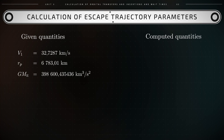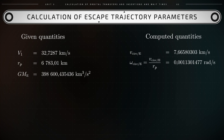With all of these parameters we find the following results: v_circ_e equals 7.66 kilometers per second and omega_circular_e equals 0.001130 radians per second. As a result, v1_e equals v_infinity_e equals 2.94 kilometers per second.